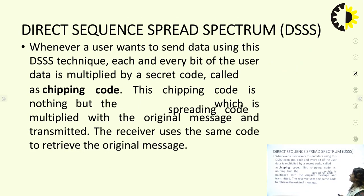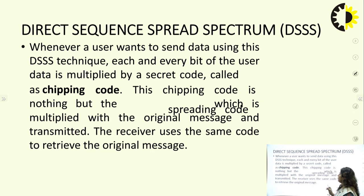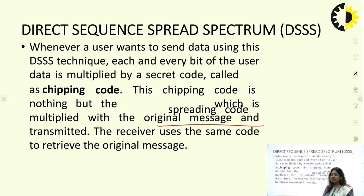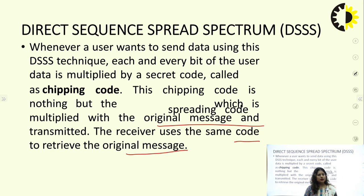Now we discuss how Direct Sequence Spread Spectrum (DSSS) works. This technique is useful for military applications. Whenever a user wants to send data using DSSS, each bit of the user data is multiplied with a chipping code or secret code. This chipping code is a spreading code multiplied with the original message before it is transmitted to the receiver. The receiver uses the same code to retrieve the original message. The modulated signal, combined with the chipping code, is sent through a channel to the receiver.